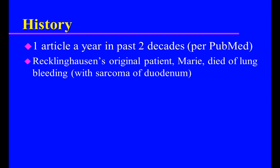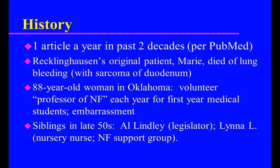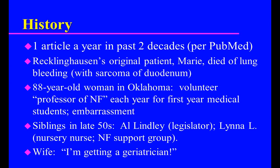Recklinghausen's original patient, Marie, died at the age of 55 or 62 of lung bleeding, probably from metastatic tumor of the duodenum. I had a patient in Oklahoma — she wasn't a patient, she was actually well, and she used to come in once a year to teach the first-year medical students about NF1. I called her my professor of NF1. She was 88, and she died a couple years ago, not of neurofibromatosis, but she had it when she died. The burden of NF for her was the embarrassment of people asking about her bumps.